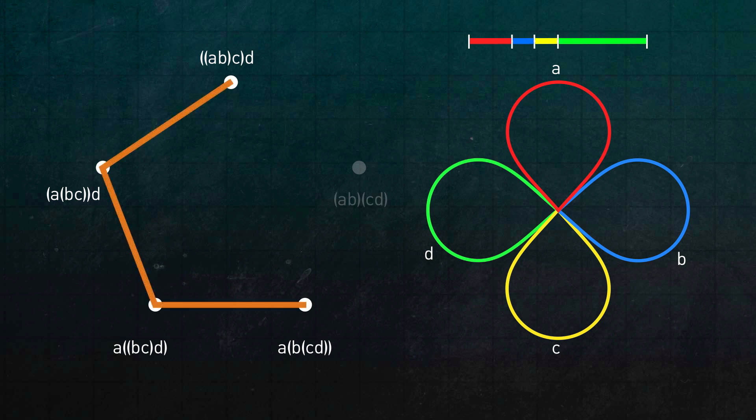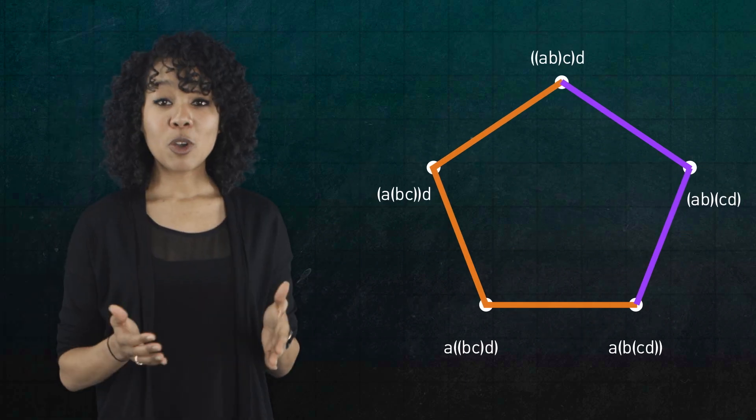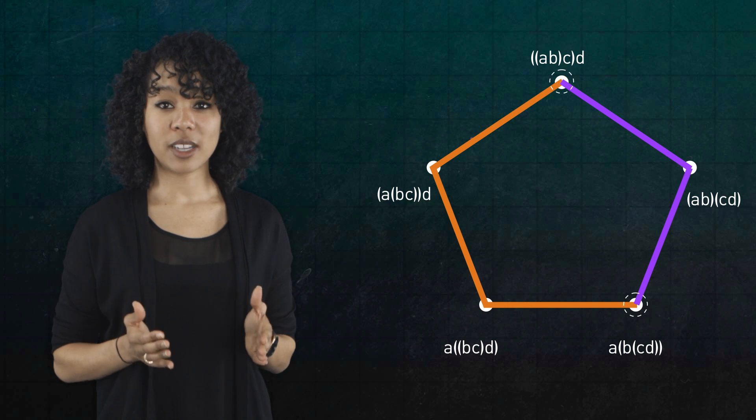We could have taken a different route. Notice, there's a homotopy from this point to that point. Simply spend more time on A and B, and less time on D. Then, we can get from here to here by spending even more time on A and less time on C and D. So, we have two paths, two homotopies connecting these two points.